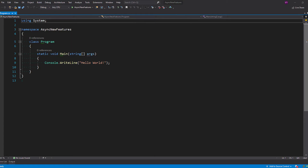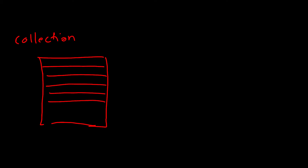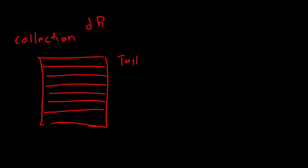The first thing we're going to talk about is async streams. Before we jump into code, let's quickly see how async streams work. Let's say we have a collection coming from a database. When we try to access it asynchronously, we generally write something like `Task<obj> = await someDbSetOperation`. What happens internally is that the await operator waits for the complete task to close before it sends the result back to the original method.